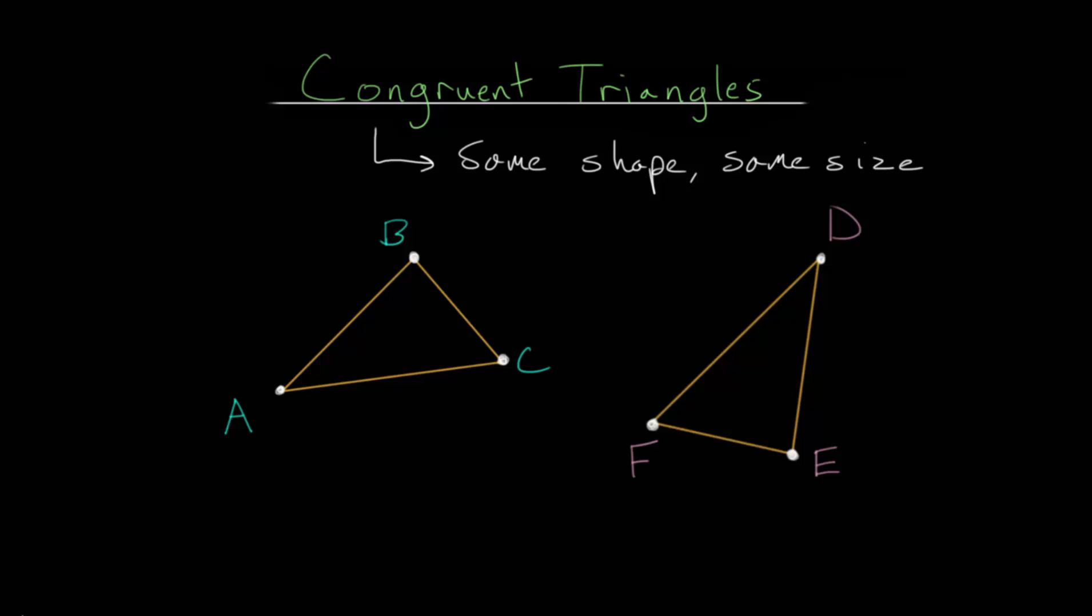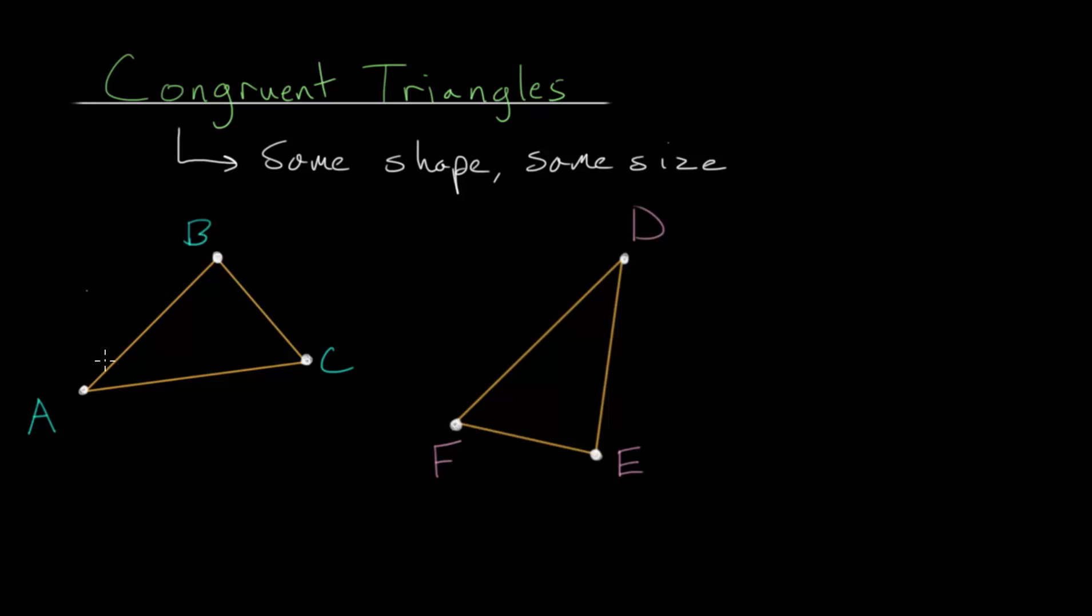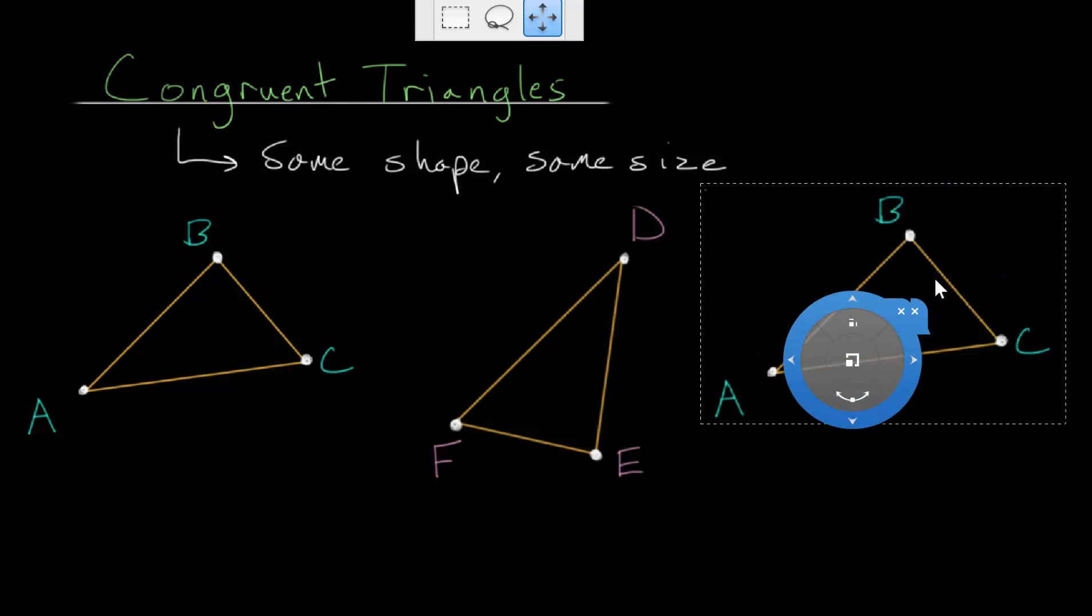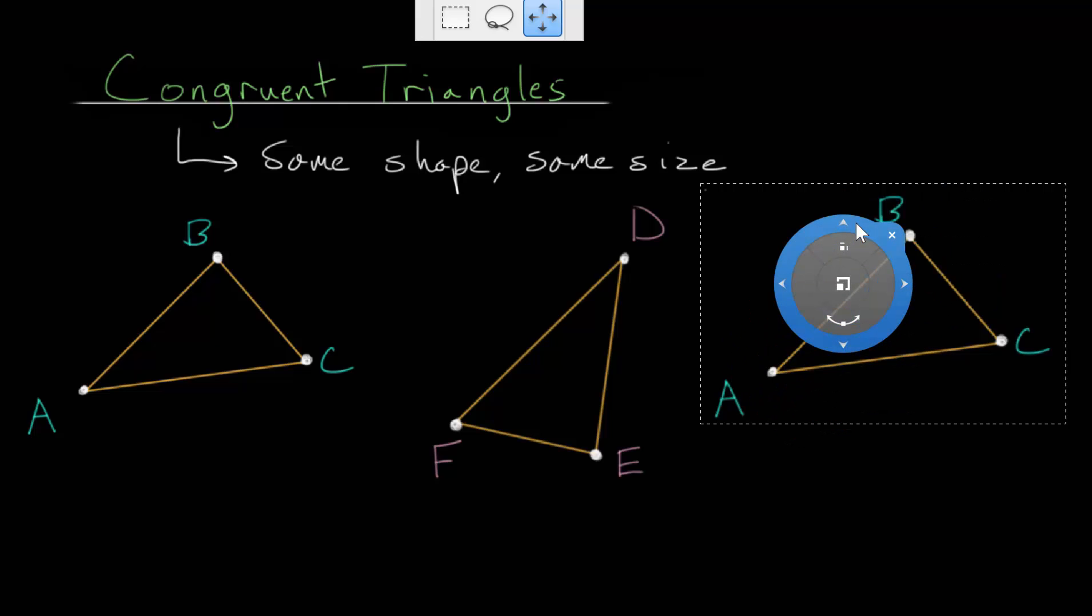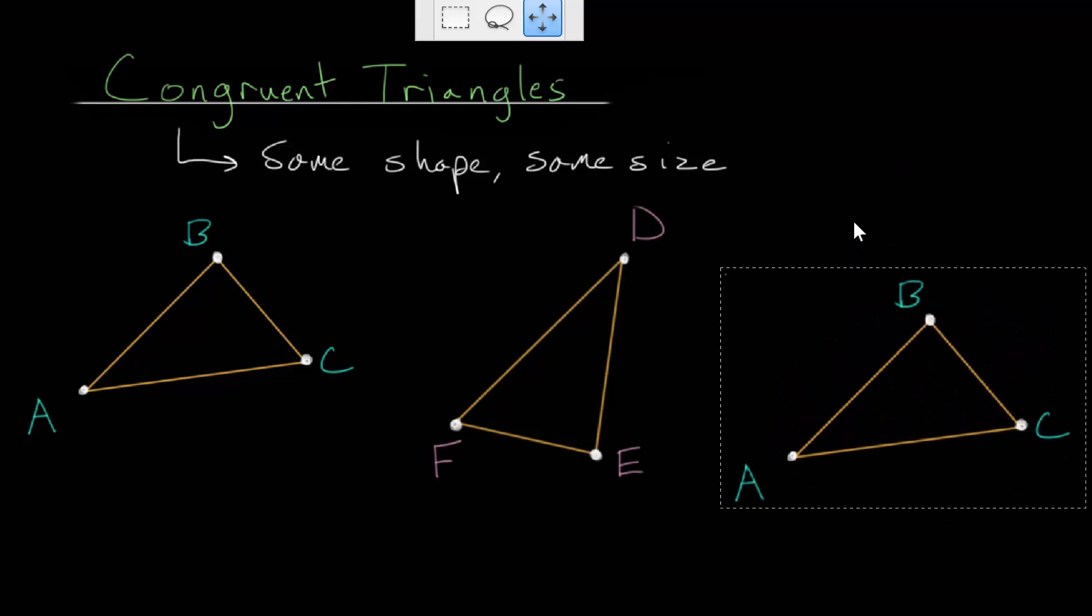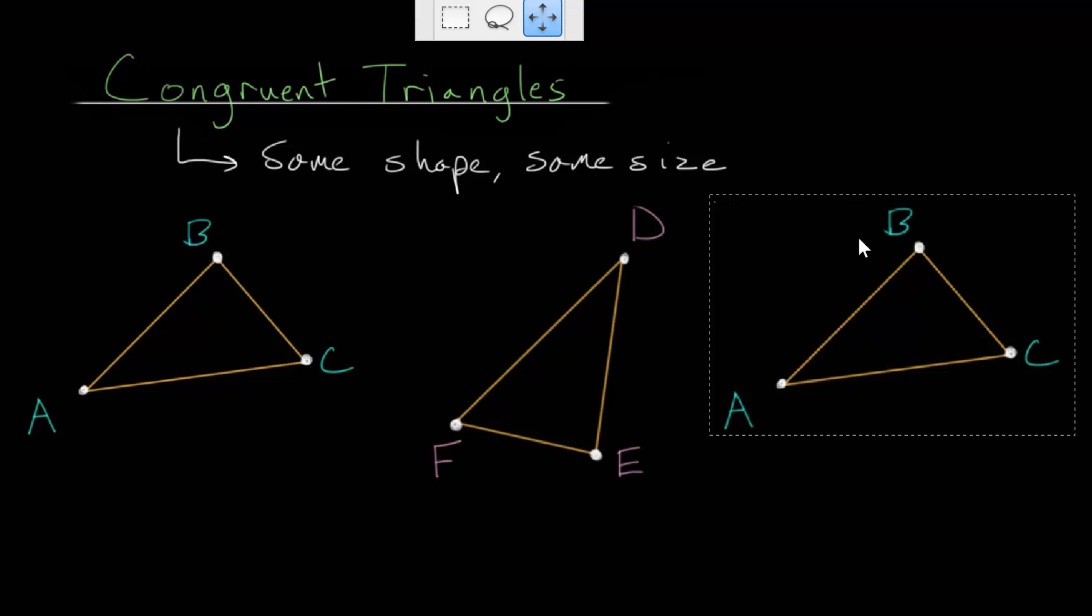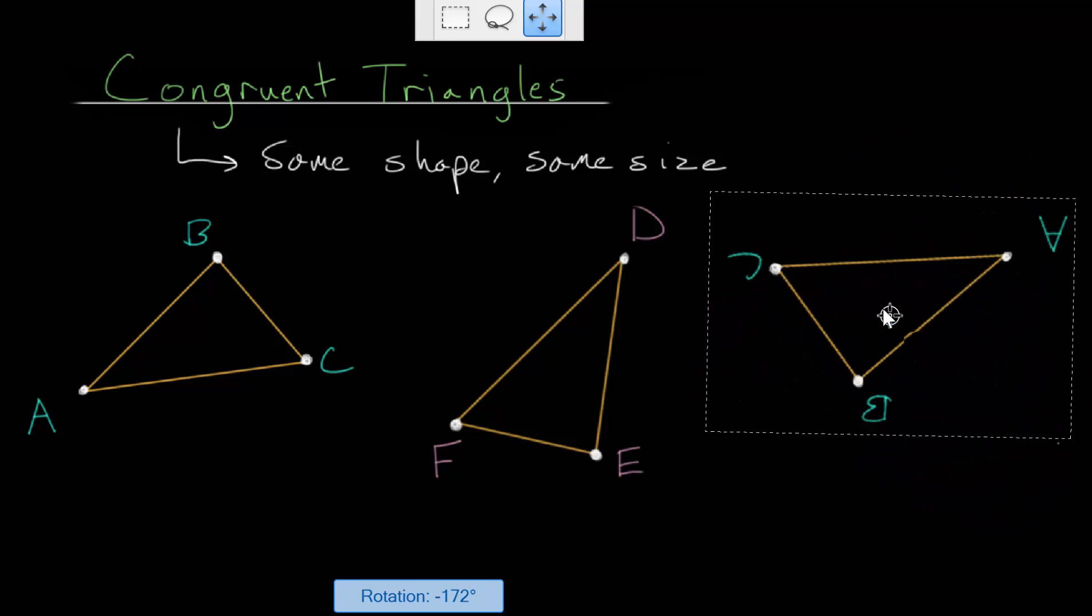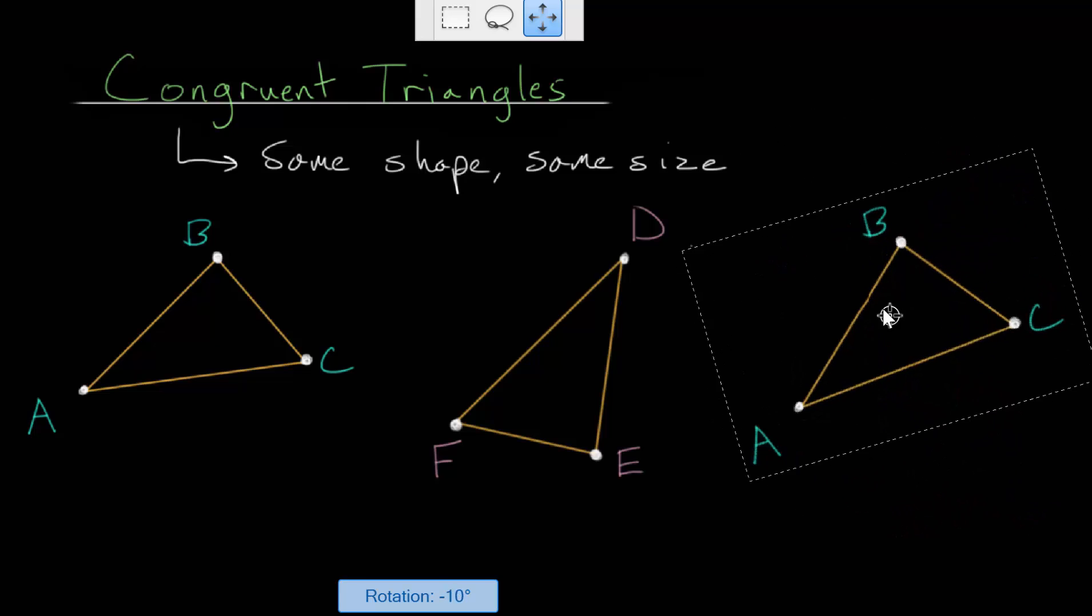So if we look at an example, let me paste in a copy of this triangle here. In other words, if we have this triangle that we're starting with, if we move the triangle around, that's called a translation, it will still be congruent to the original triangle. If we rotate the triangle, it will still be congruent to the original triangle.